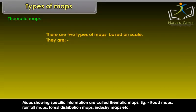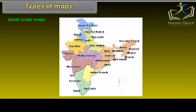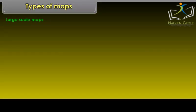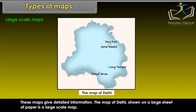There are two types of maps based on scale: Small Scale Maps and Large Scale Maps. When large areas are shown on a small map, it is called a Small Scale Map. These maps give very limited information. When small areas are shown on a large map, it is called a Large Scale Map. These maps give detailed information.